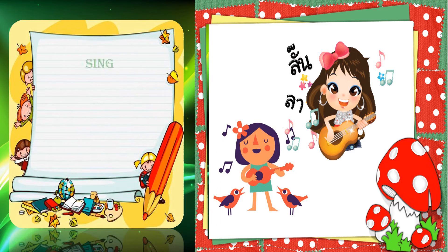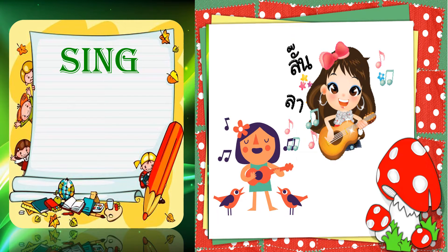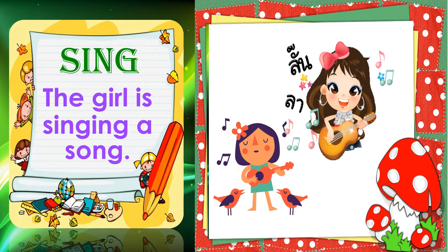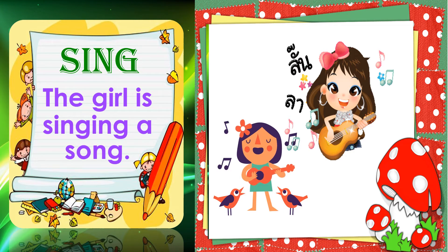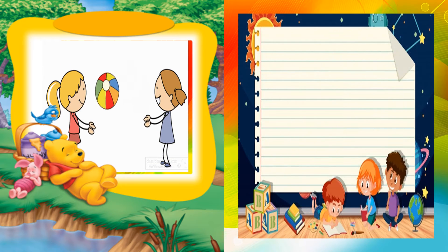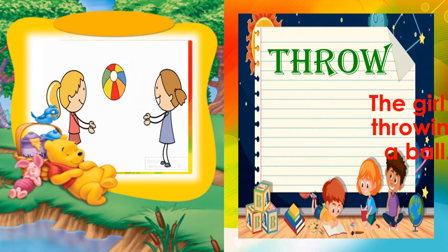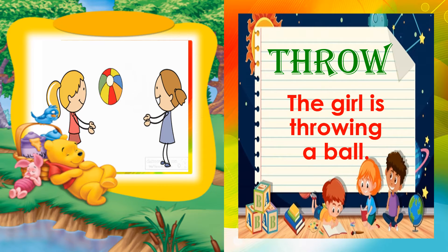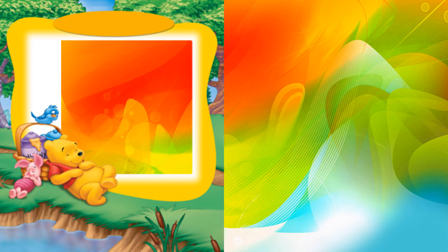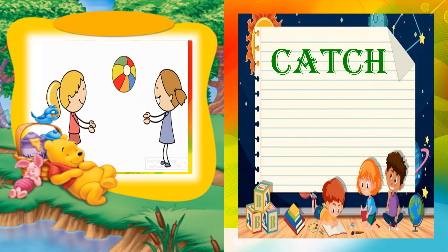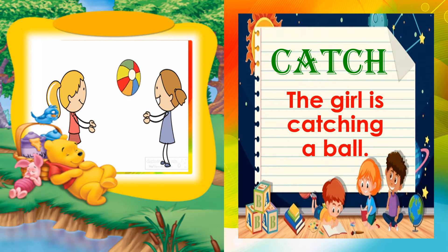Next, we have sing. Sing. Use the word sing in a sentence. The girl is singing a song. Very good! Next action word is throw. Throw. Use the word throw in a sentence. The girl is throwing a ball. Next action word is catch. Catch. Use the word catch in a sentence. The girl is catching a ball. Great job!